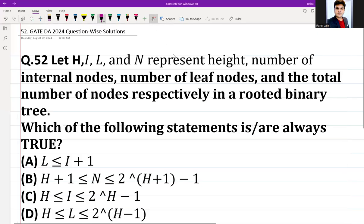Hello everyone, I hope you all are doing very well. The following question was asked in GATE DA 2024 for two marks. The question is also MSQN nature. Let H, I, L, and N represent height, number of internal nodes, number of leaf nodes, and the total number of nodes respectively in a rooted binary tree. Which of the following statements are always true?